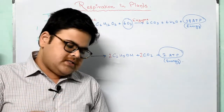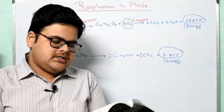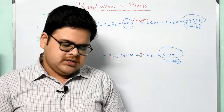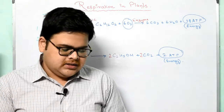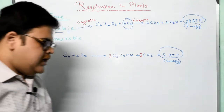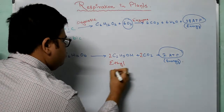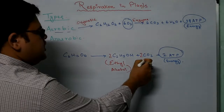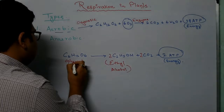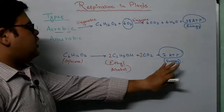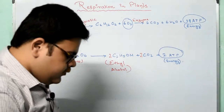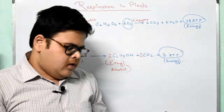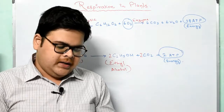Now let us quickly look at the differences between aerobic and anaerobic respiration. Aerobic respiration occurs in the presence of oxygen; anaerobic occurs in the absence of oxygen. Aerobic involves complete breakdown of glucose; anaerobic involves incomplete breakdown. End products of aerobic respiration are carbon dioxide and water; end products of anaerobic respiration are ethyl alcohol and carbon dioxide. Aerobic releases 38 ATP from one mole of glucose; anaerobic releases only 2 ATP from one mole of glucose.